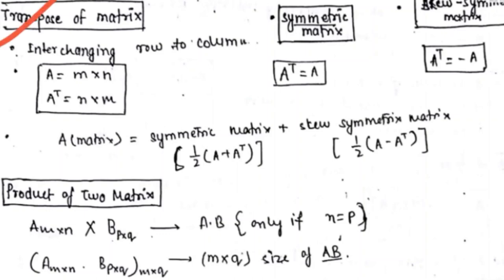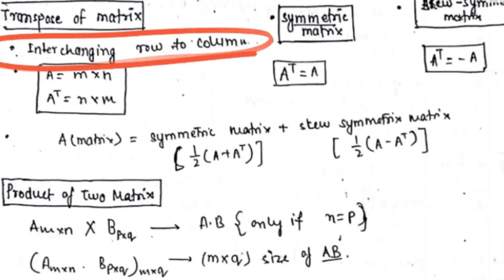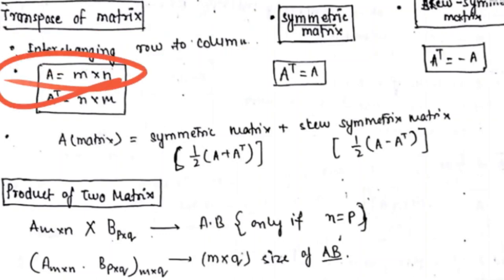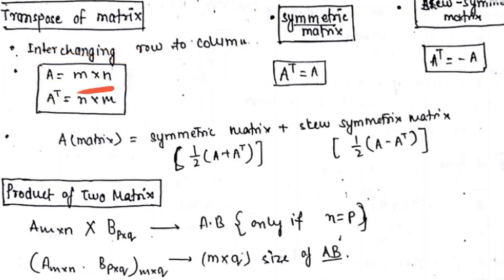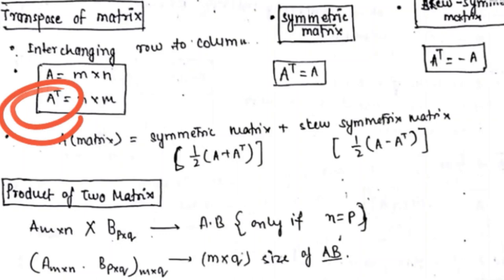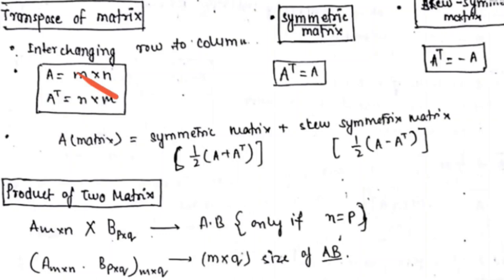The transpose of a matrix means interchanging rows with columns. If there is a matrix A of size m by n, then A transpose — written as A to the power T — is the matrix in which columns are changed to rows and rows are changed to columns.